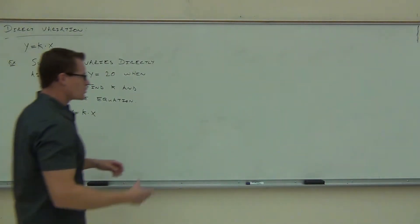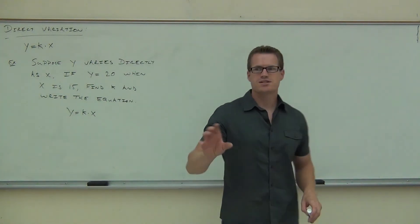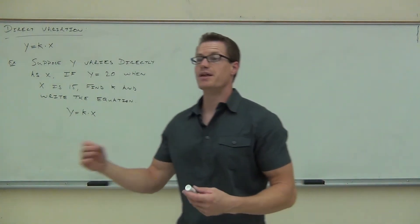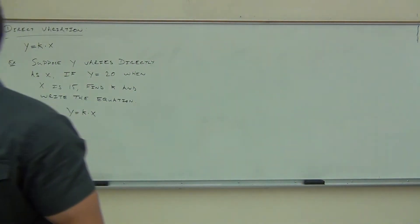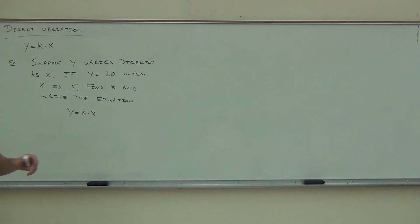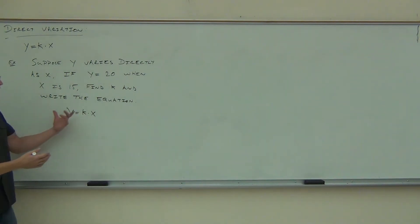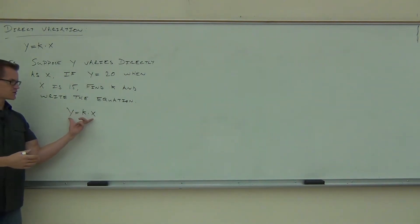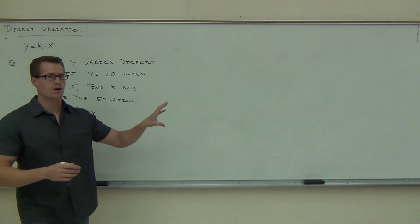Let's see what happens here. We know we have to substitute in — that's why the second sentence is even there, to give us some numbers to allow us to solve for k. When we're dealing with direct or even inverse variation in just a little while, we're going to have one of these equations: either y equals k times x, or in the future, y equals k over x.